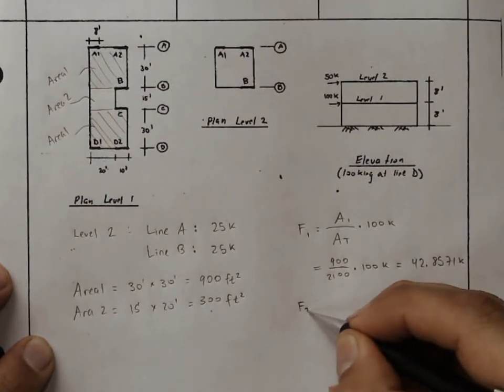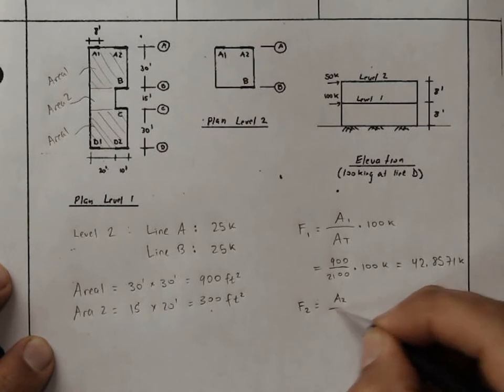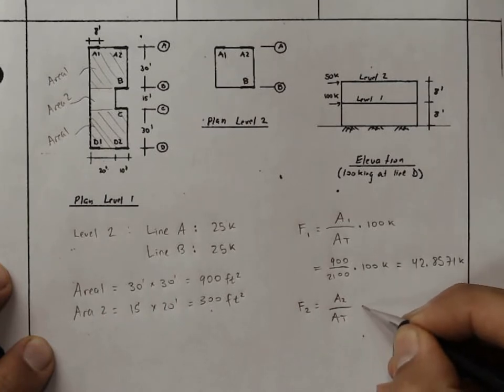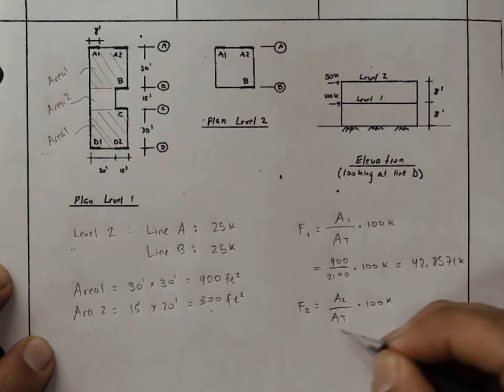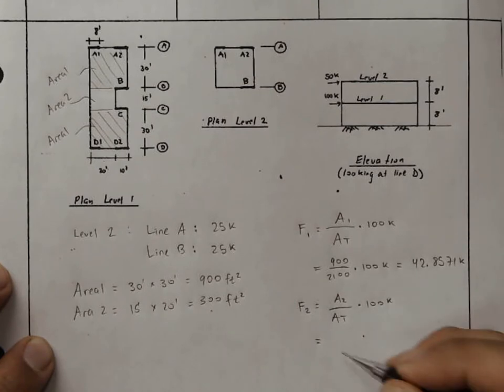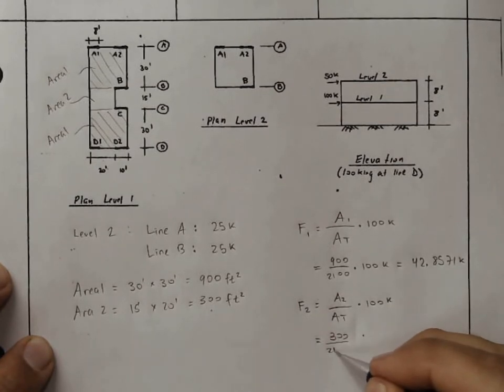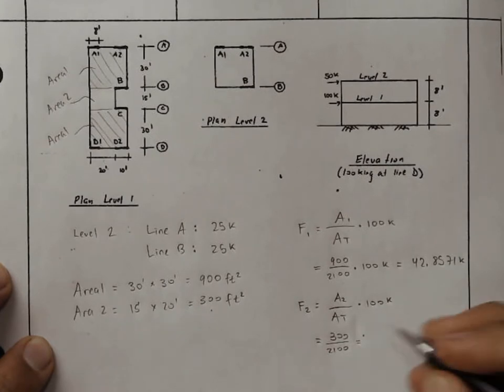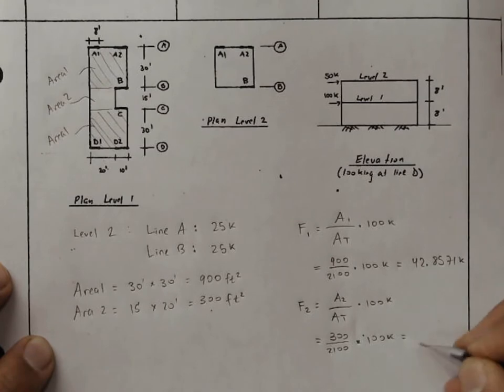Similarly, we can look at the force on area 2 as A2 over the total times 100 kips. This is equal to 300 divided by 2100, times 100 kips, and this works out to 14.3, or we'll keep a few more decimals, 2857 kips.